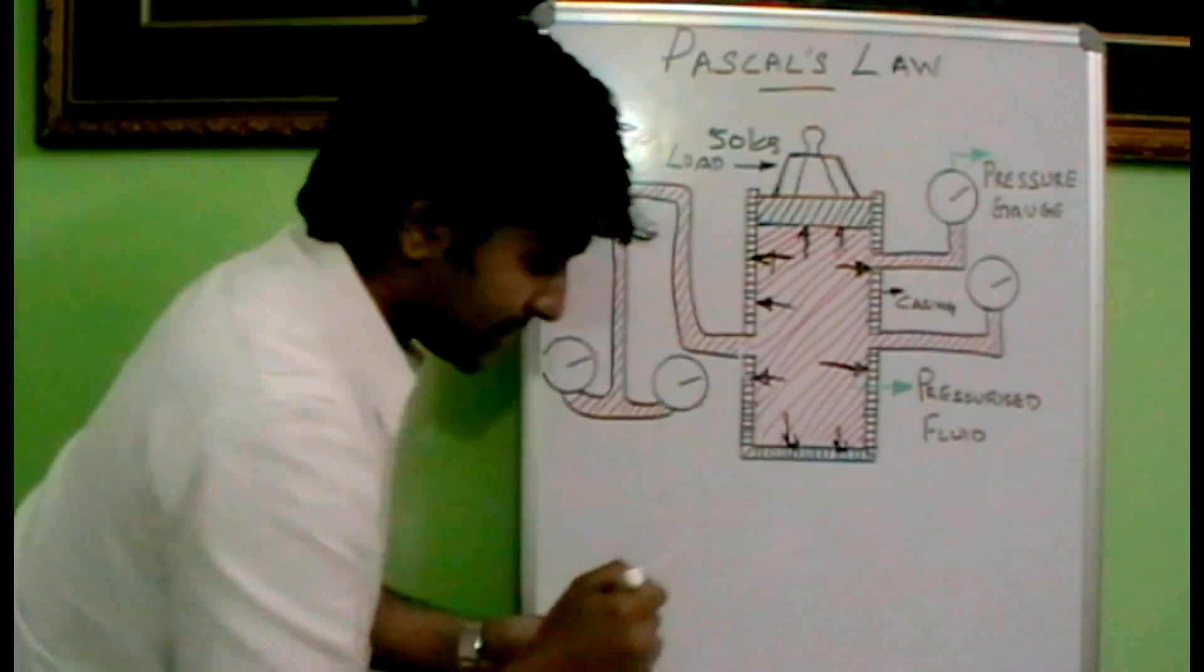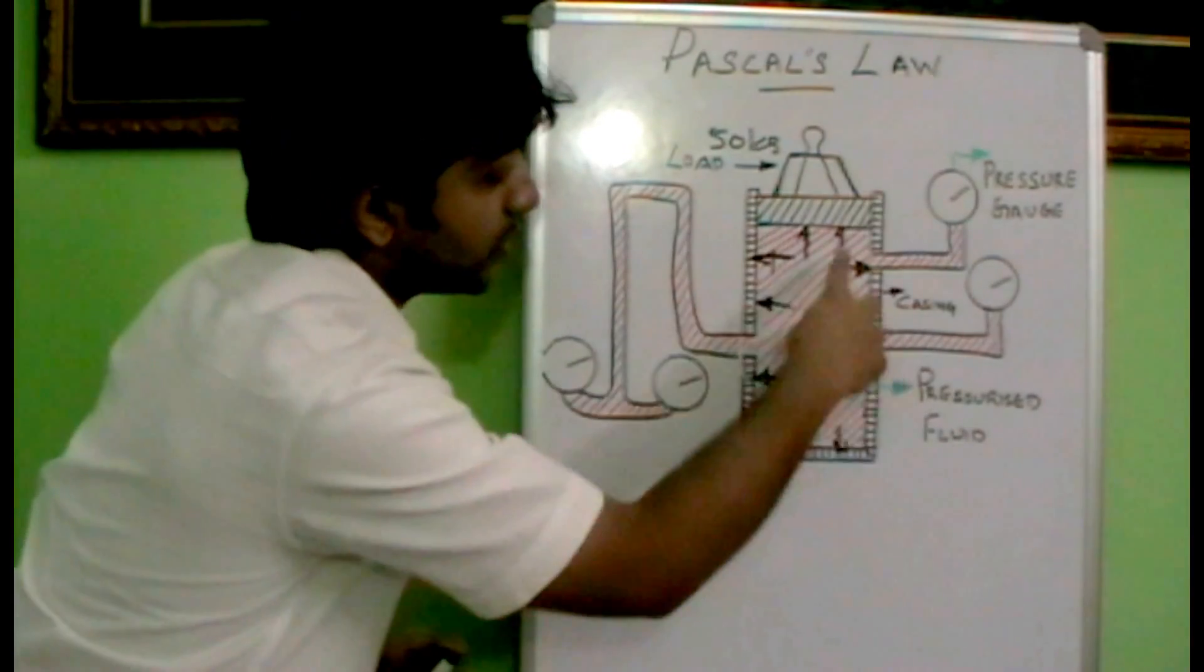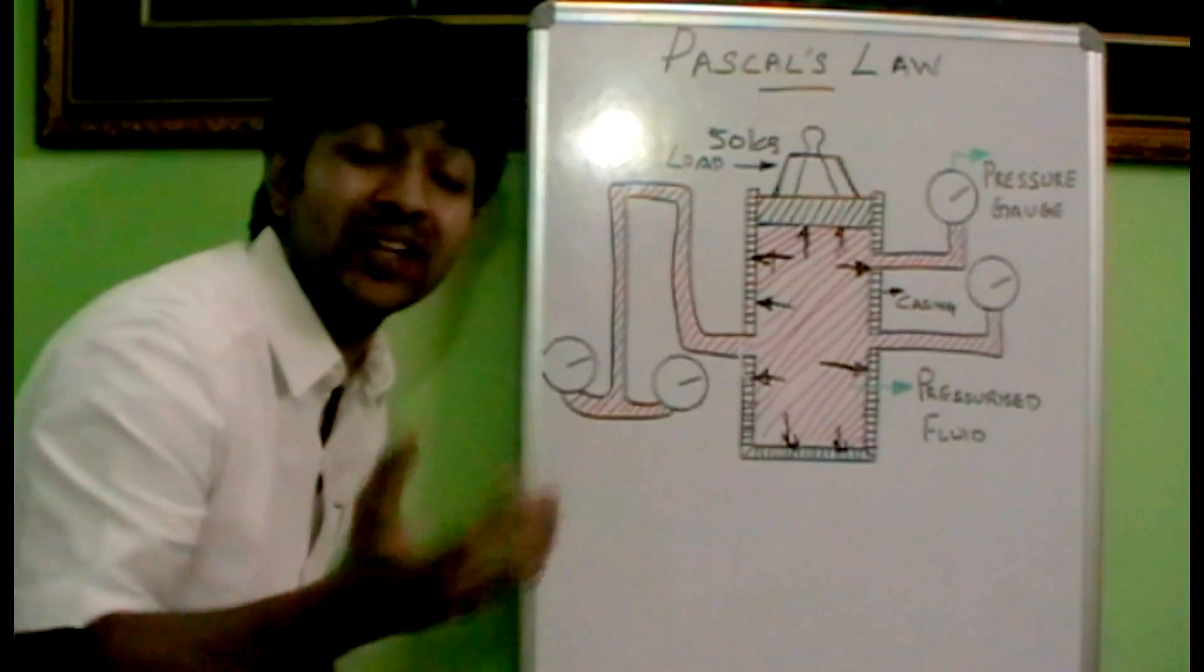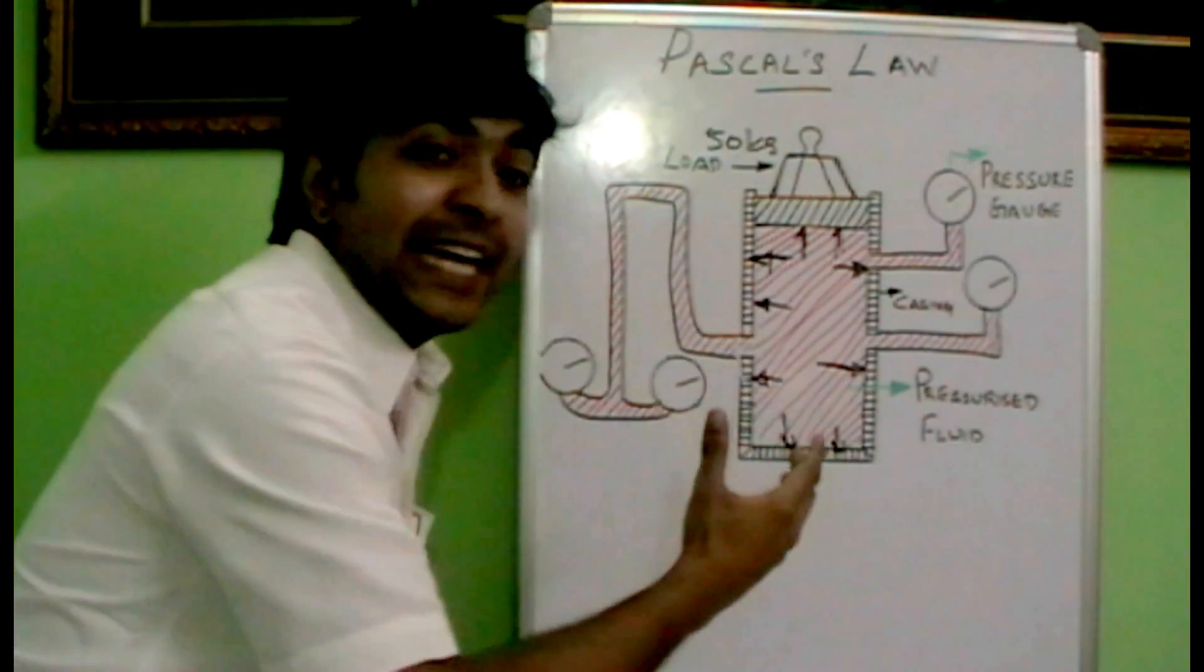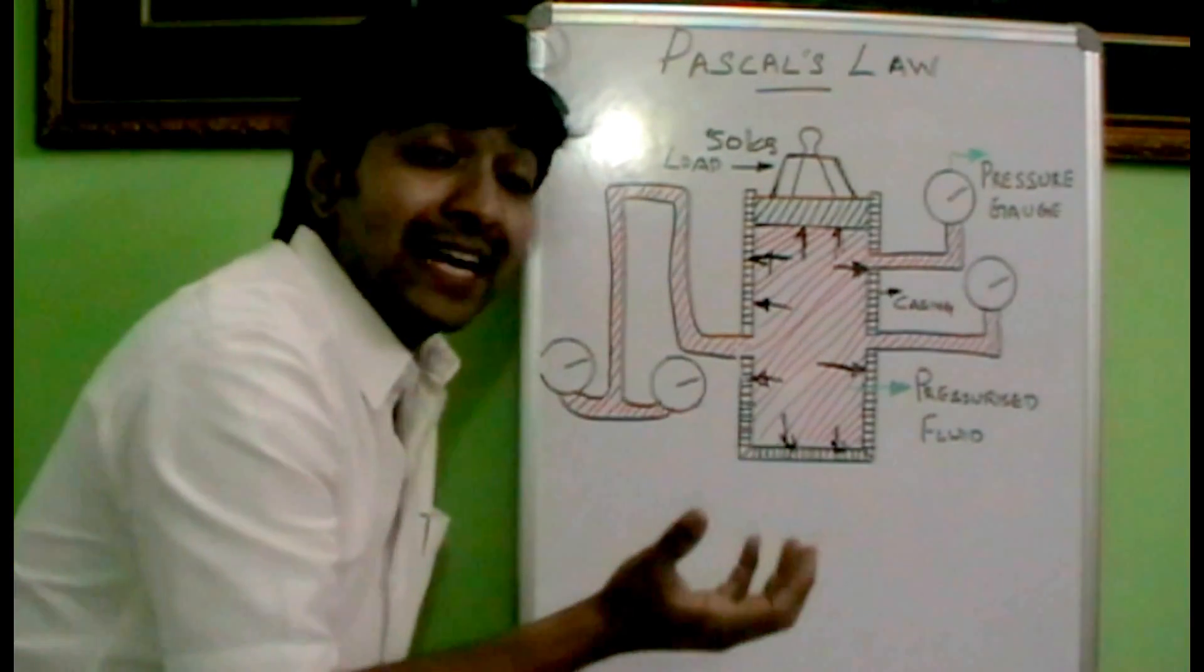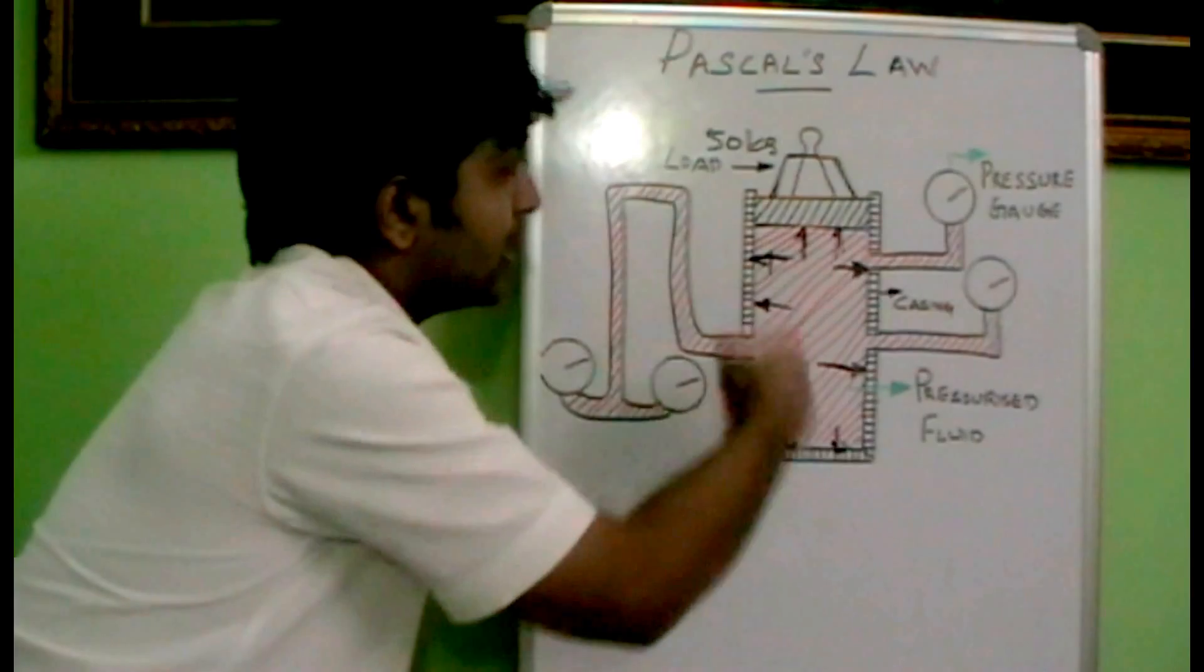That's why all the pressure gauges show the same pressure. Anywhere you connect a pressure gauge, it will show the same pressure. That's what Pascal's Law states - the pressure is transmitted equally, but the condition is that it must be a confined fluid.